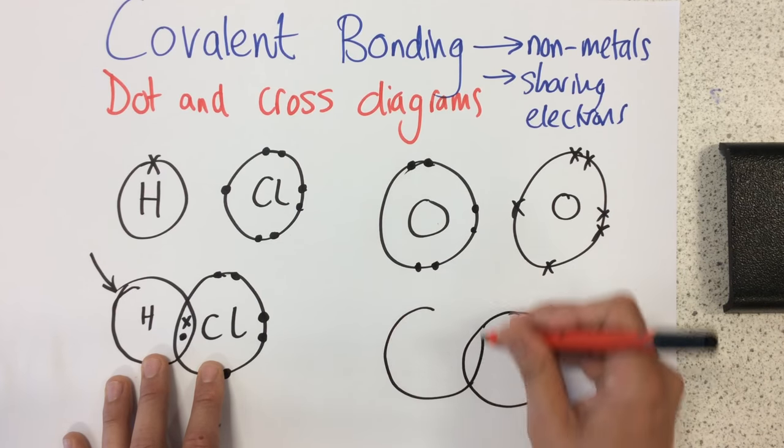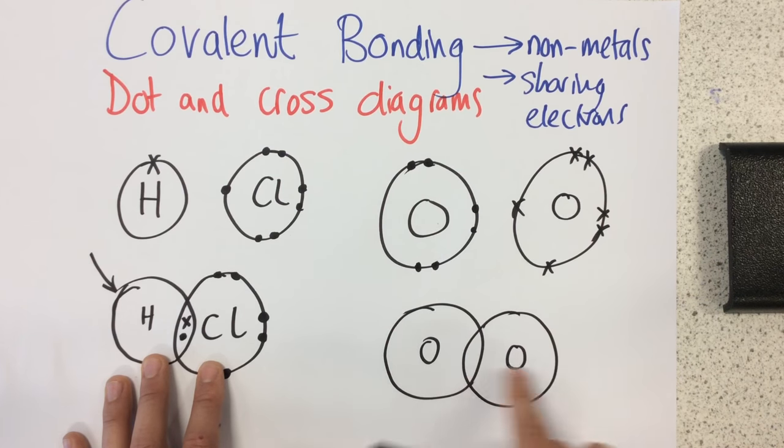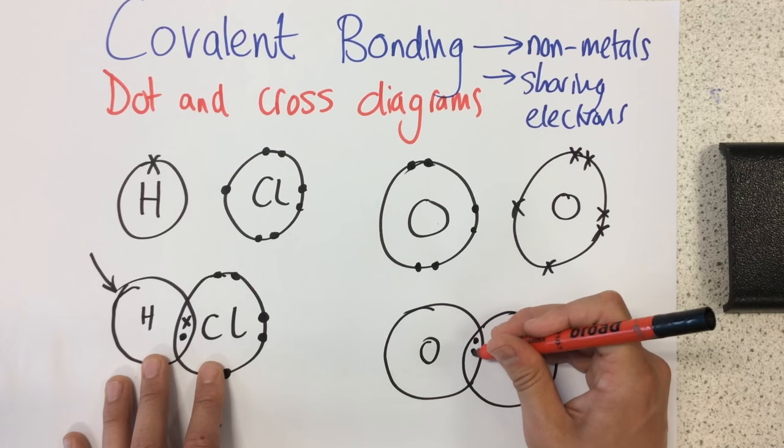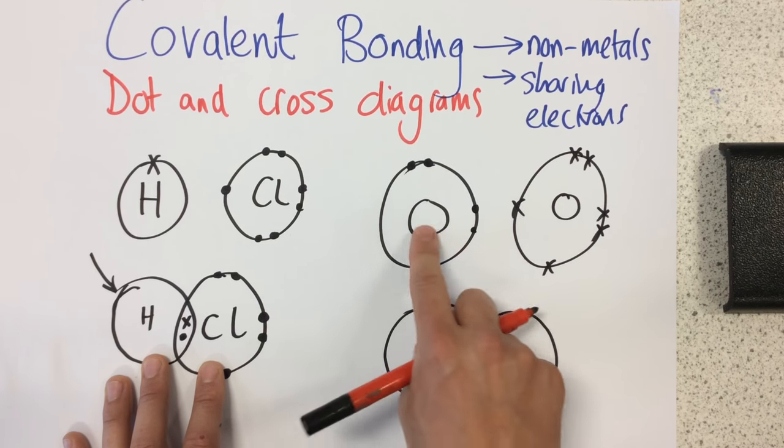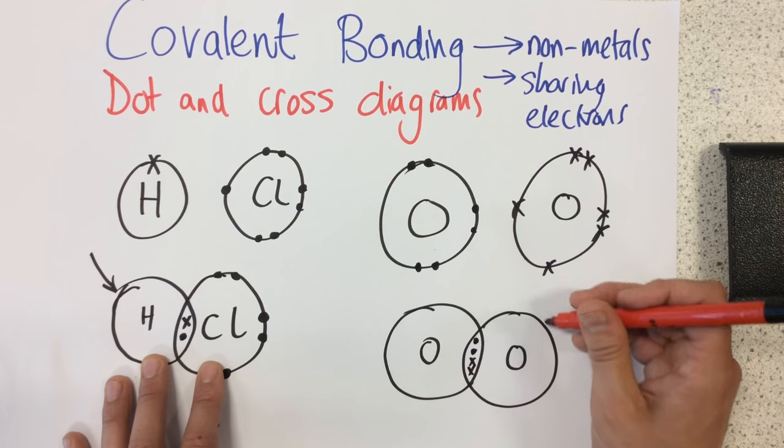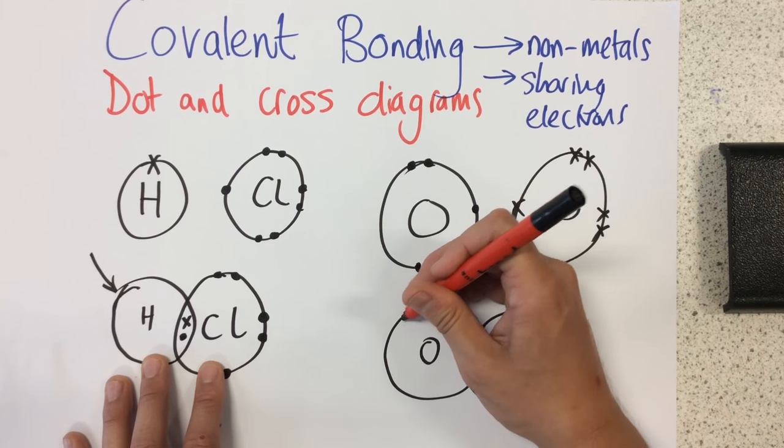So again, I've drawn these two atoms overlapping, just writing an O for oxygen in the middle. So we can see this time there's two of those electrons are going to be shared from this one, and two are going to be shared from this one. So there's just the other electrons that make it up.